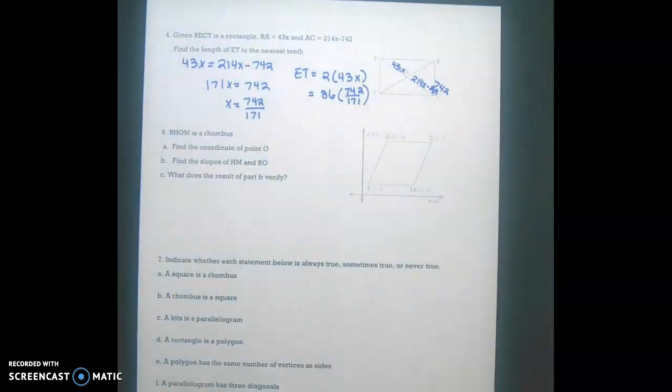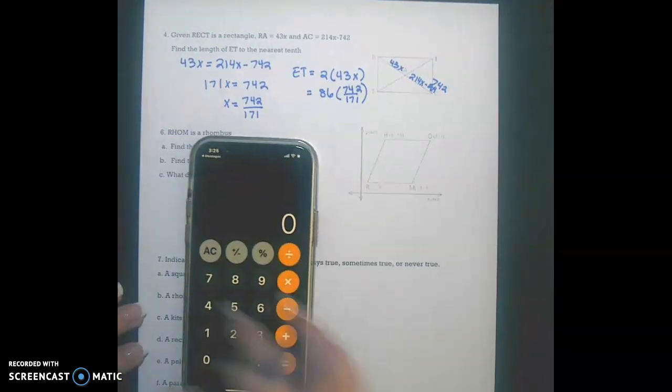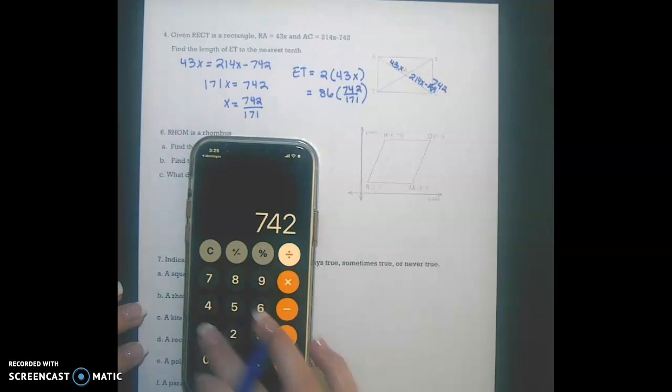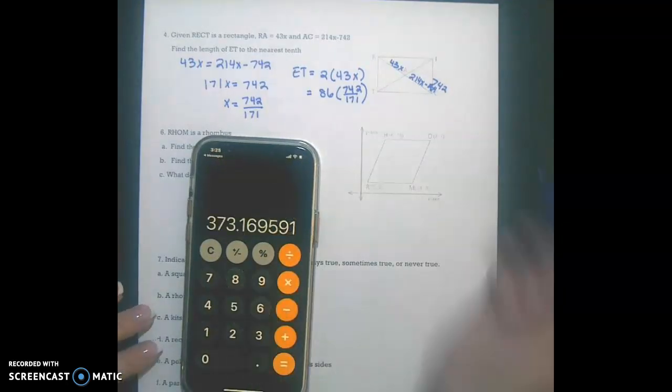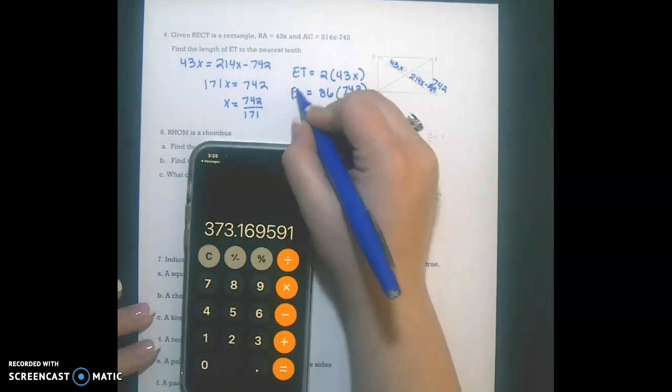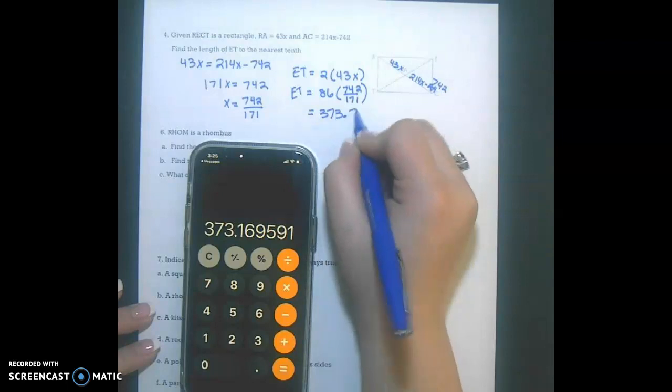So what I want to do now is pull out my calculator, and I'm going to divide 742 by 171, and then I'm going to multiply by 86, and I want to round to the nearest tenth, so ET is 373.2.